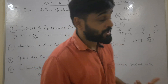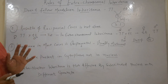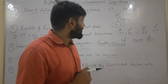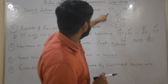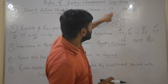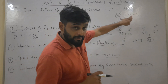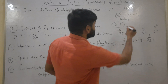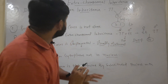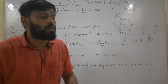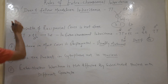The first rule is it does not follow Mendelian inheritance. In Mendelian inheritance, when we cross between two traits — for example tall and dwarf — in F1 we get tall, and in F2 after selfing we get a 3:1 ratio. Such a ratio is not found in extra-chromosomal inheritance.